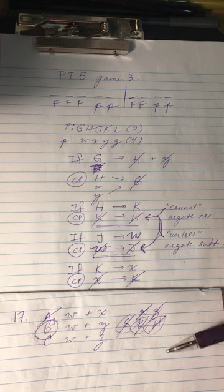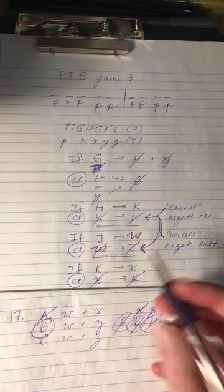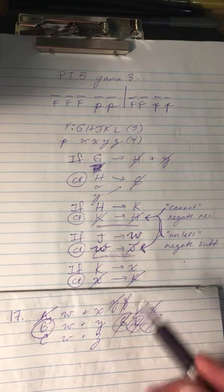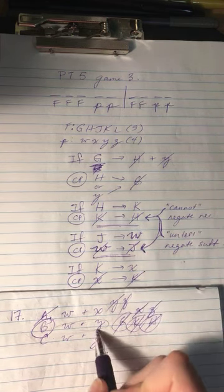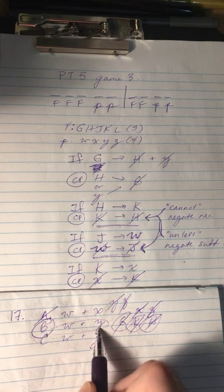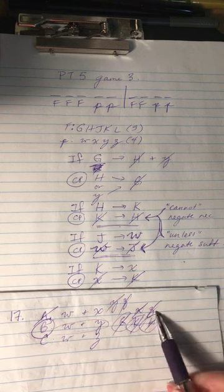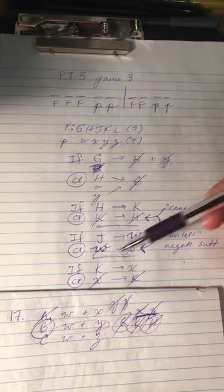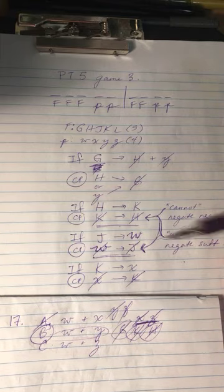Sorry, I got ahead of myself there. Here, if Y is out, that doesn't have any consequences. And if Z is out, that doesn't have any consequences. But if we're being told that these are the plants selected, the other part of that is that we know that the other two plants are not selected.